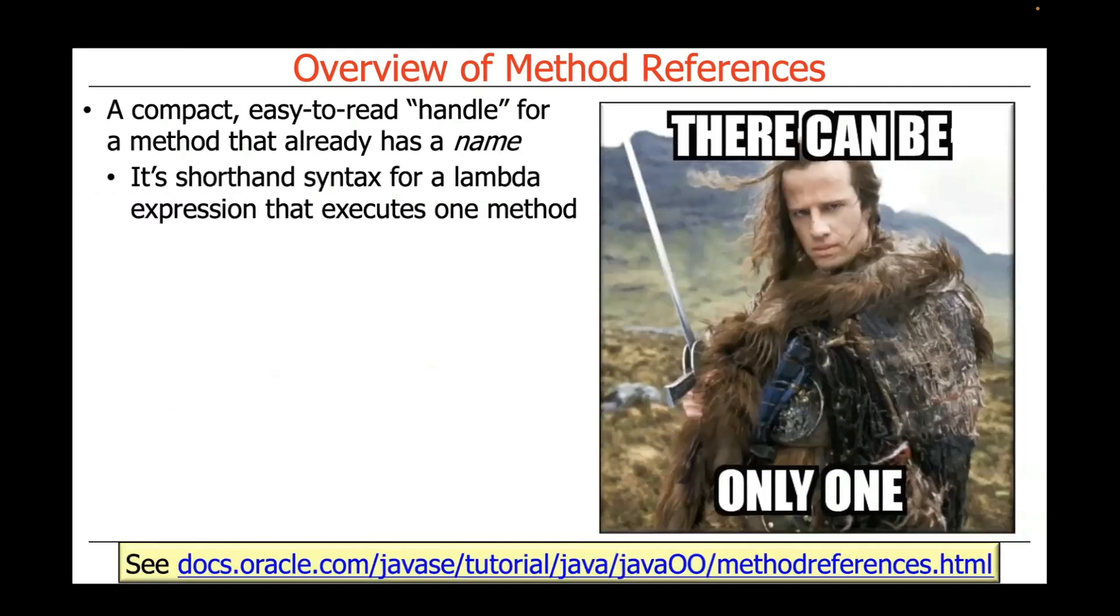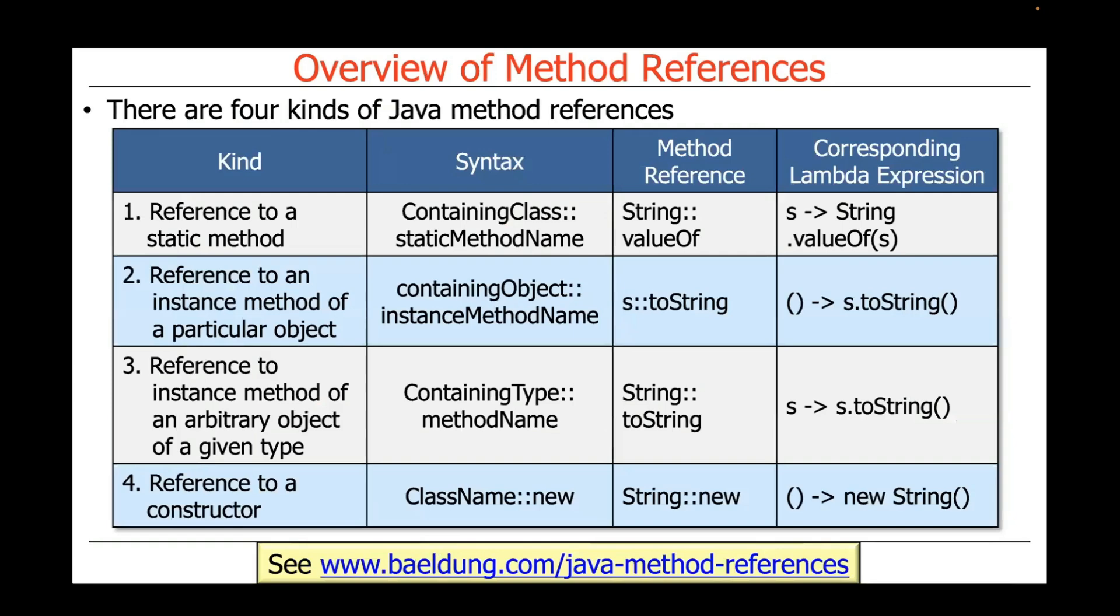A method reference can also be looked at as essentially shorthand syntax for a Lambda expression that executes one and only one method. There are four kinds of Java method references.